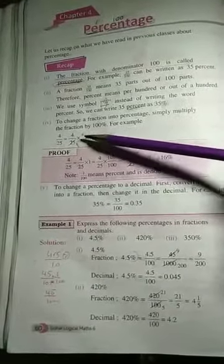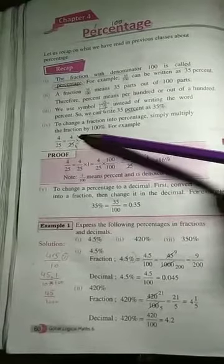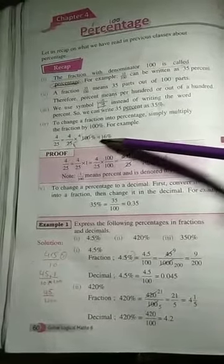25 into 25, 25 into 100. 4 times 4 is 16%. So 16%.